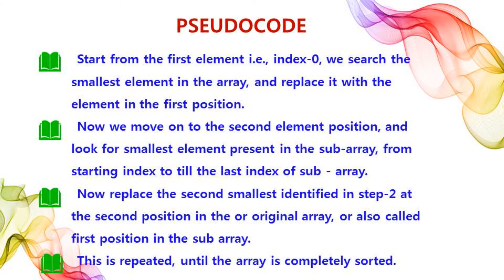Selection sort starts with the first element at index 0. We search for the smallest element in the array and replace it with the element in the first position. Then we move to the second position and find the second smallest element. This process is repeated until the array is completely sorted, placing the smallest element first, then the second smallest, and so on.